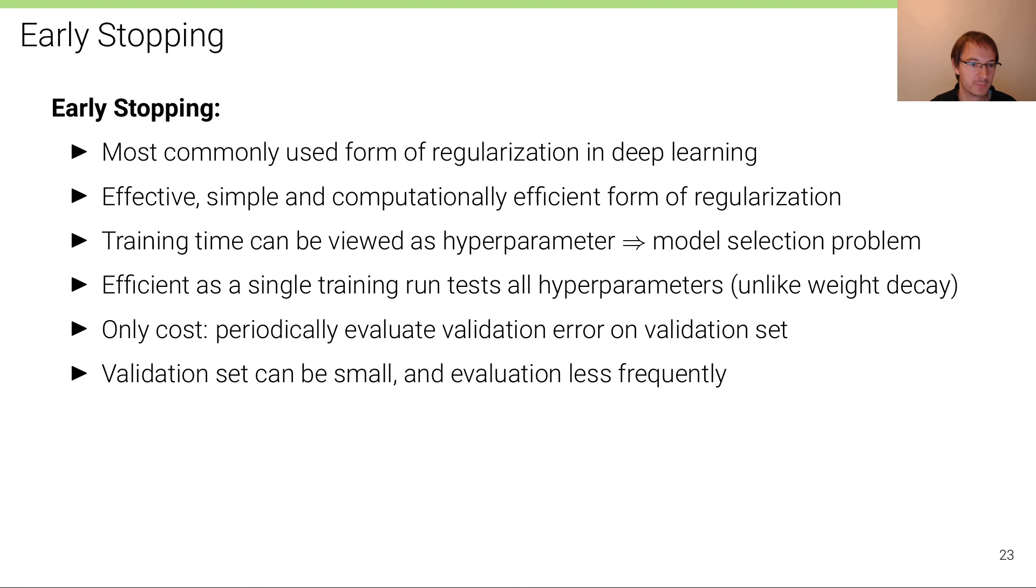Again and again for different alpha values to determine the best alpha value. This is not the case for early stopping, so it's very efficient. The only cost that is incurred is that we need to periodically evaluate the validation error on the validation set. But it's something that's very common in machine learning. It's the first thing you should do. You should always look at your TensorBoard or whatever you use to monitor performance and look at the validation error and see if it starts increasing again.